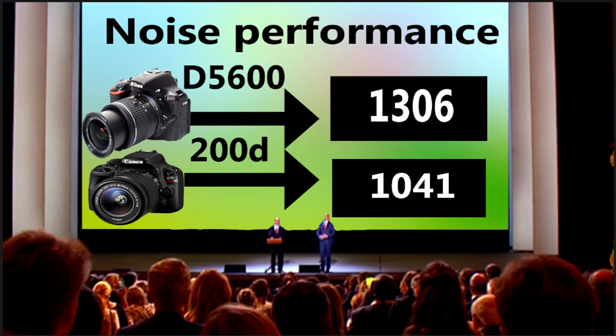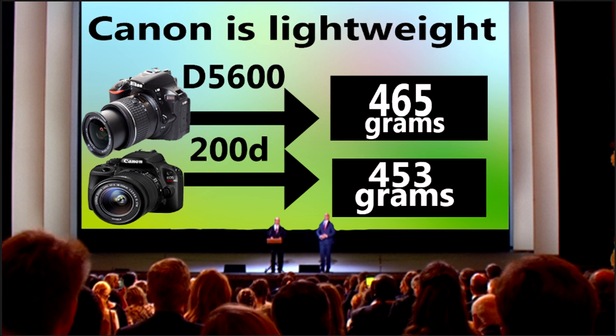Nikon also gives you better noise performance: 1306 ISO versus 1041 ISO for Canon. Now we will talk about the advantages of the Canon 200D.